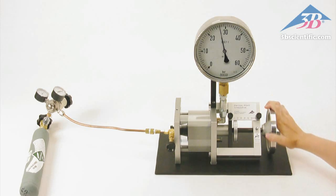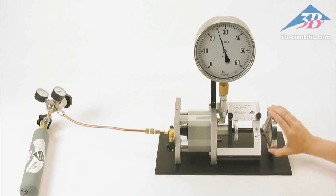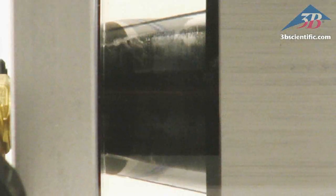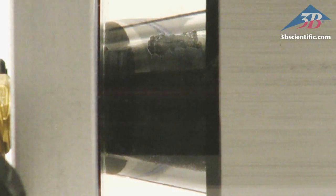Once the critical pressure has been reached, return the handwheel to its original position. Notice the bubbles that appear in the liquid as it begins to return to a gas.